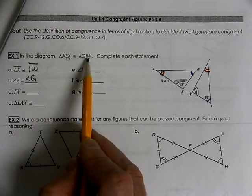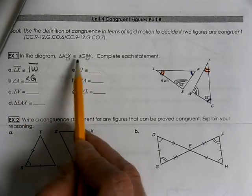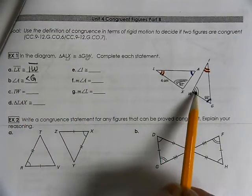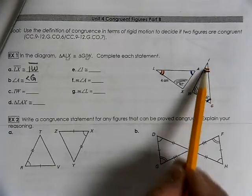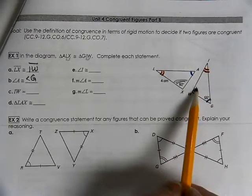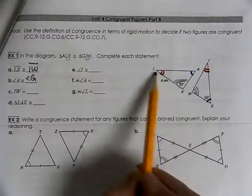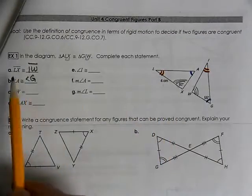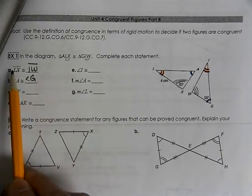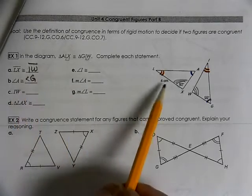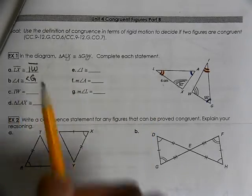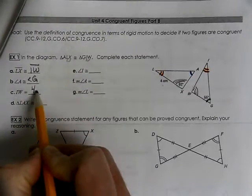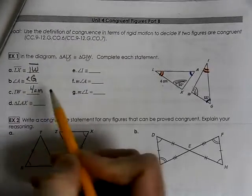So IW, we've actually already talked about IW. That's from the gray and the red. We're looking for that measurement, which is supposed to be the same as the other triangle, which is 4. So since IW is congruent to LX, LX is 4, so IW is also 4. And you can put centimeters next to it.